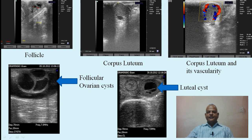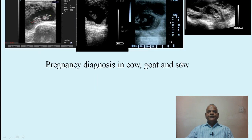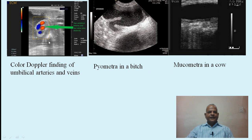These ultrasound pictures show pregnancy diagnosis in cattle: the fetus, fetal appendages, the forelimbs and hindlimbs, and the head of the fetus. In the goat using a transrectal linear probe, in the ewe, and using a sector probe in the sow. Color Doppler findings of umbilical arteries and veins in a buffalo are also shown, along with pyometra in a bitch and mucometra in a cow.